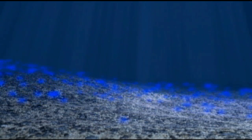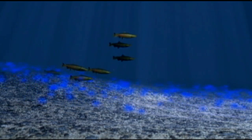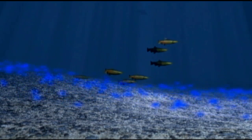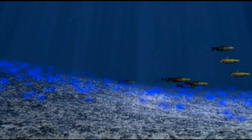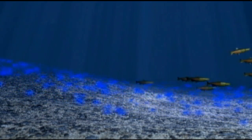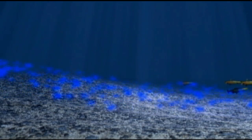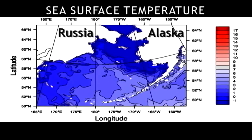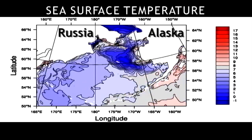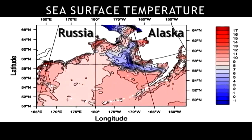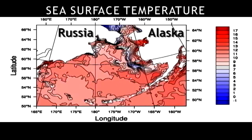That flow is forced by a sea level height difference between the North Pacific and the Arctic Ocean. The North Pacific is about half a meter higher, so there's a net flow north through Bering Strait, and we need to provide that as a boundary condition.